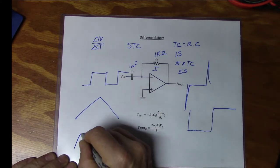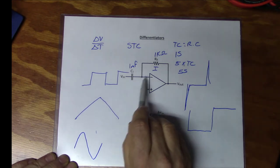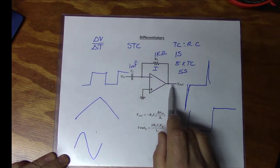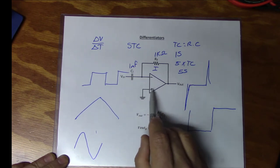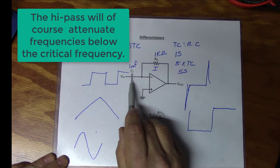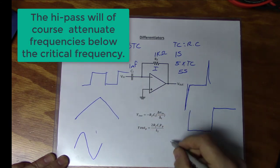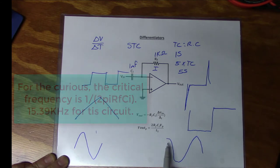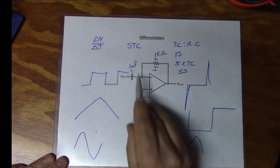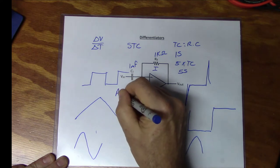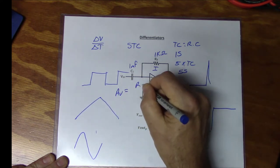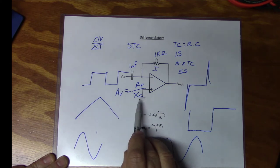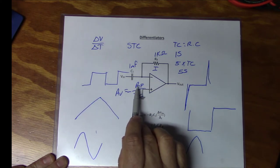What happens if we put a sine wave into the circuit? For a sine wave, this acts just like a high-pass filter, so we get a sine wave at the output with a phase shift — the inversion plus the capacitor's phase shift gives us a cosine wave at the output. The gain of the circuit is RF / XC, and negative because it's an inverting device. As we go up in frequency, the gain goes higher and higher.